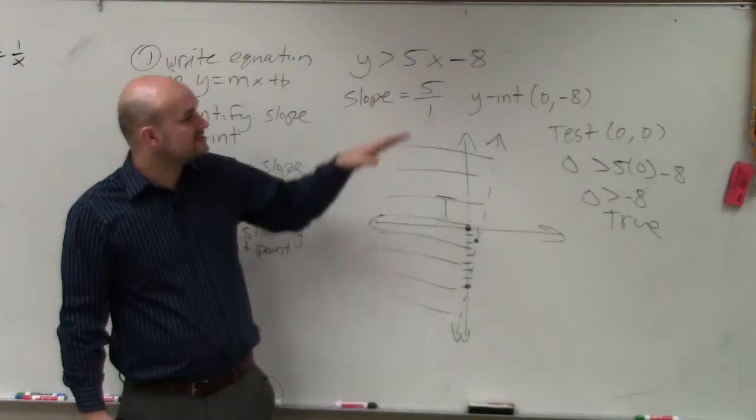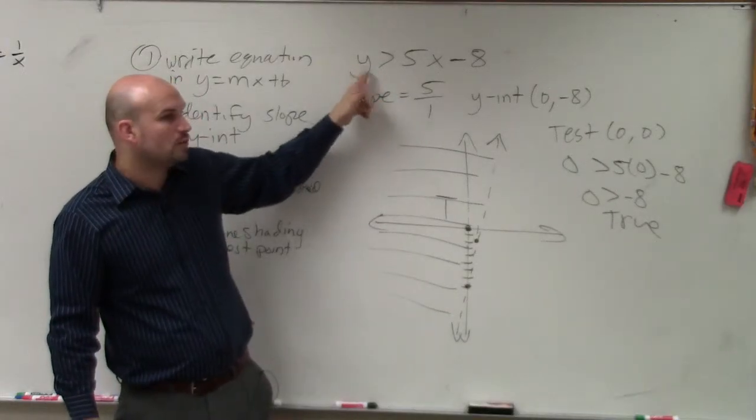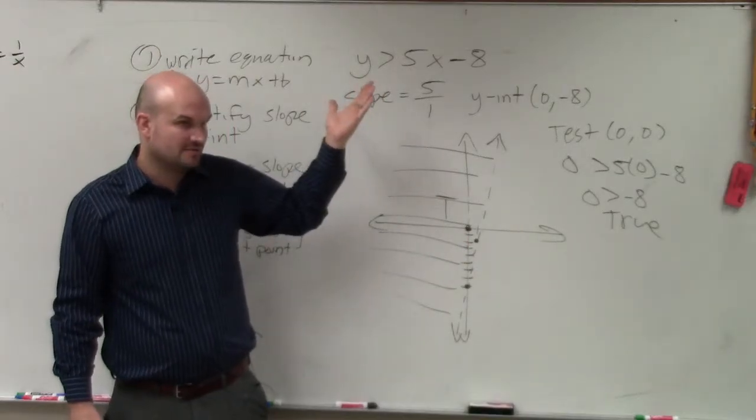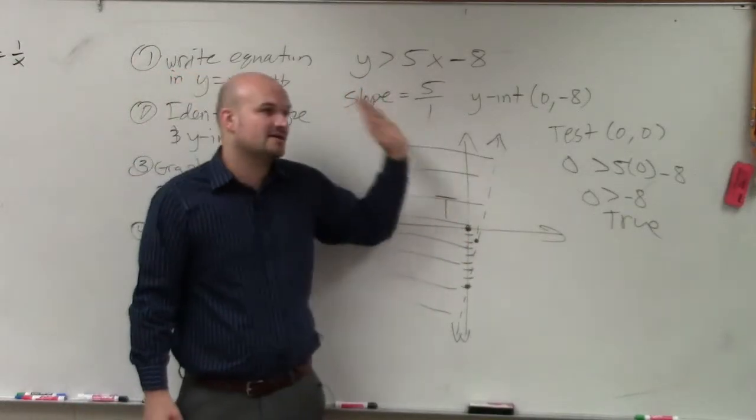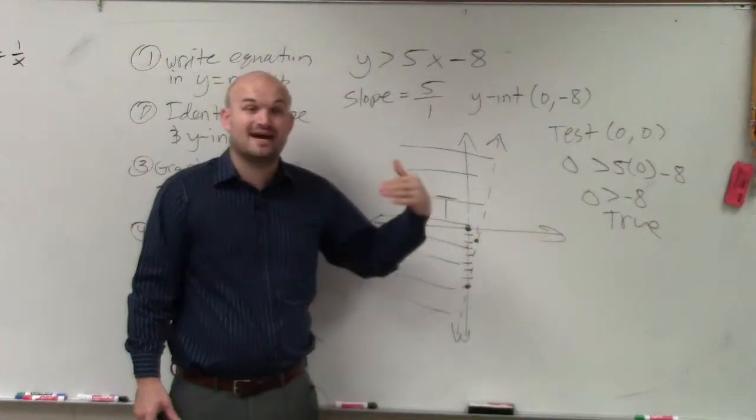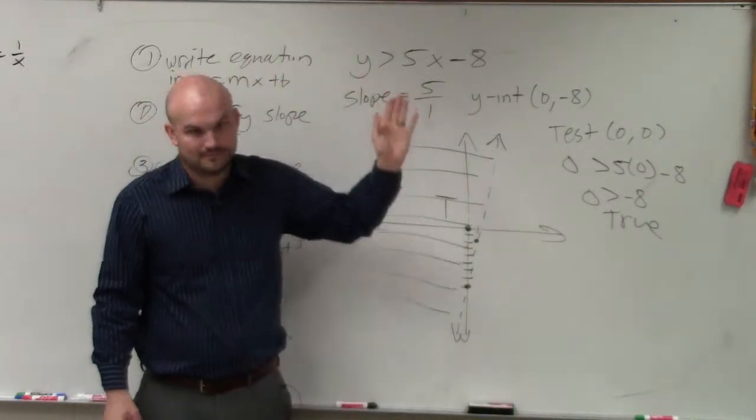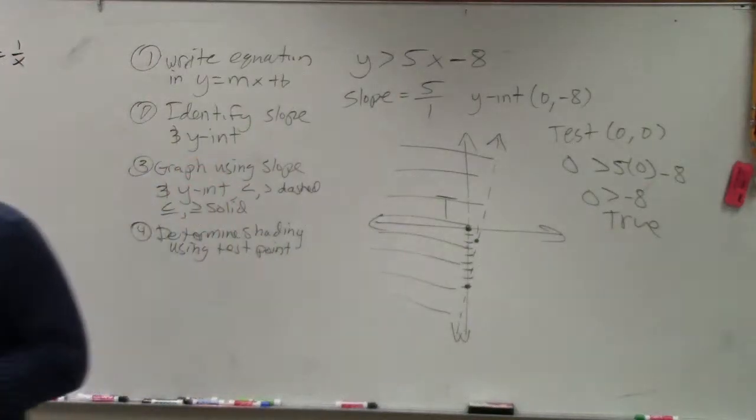The other thing you guys can notice, as long as your equation is solved for y, you can see that the greater than will tell you that the points are going to be above the line. If it's less than or less than or equal to, it'd be below the line. But that only works when your equation is solved for y. Only works in that case. Any questions on that?